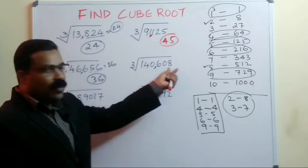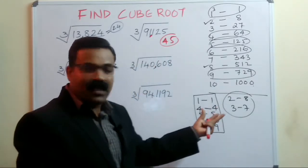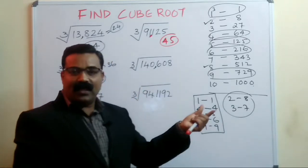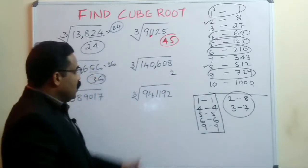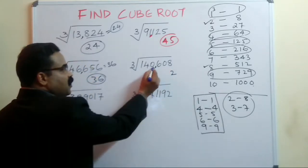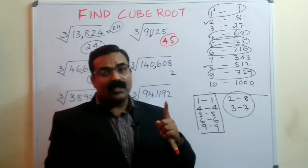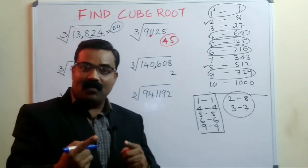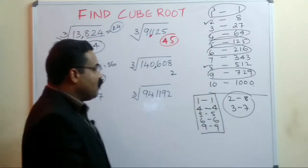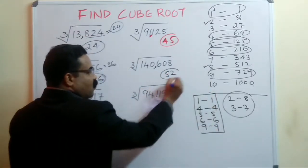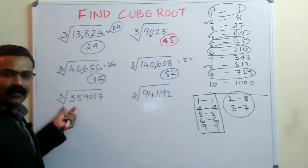For a bigger number: put a comma after the last three digits — they are 608, ending with 8. Since 2 and 8 are interchangeable, the answer ends with 2. Remove those three digits; what remains is 140. The perfect cube before 140 is 125 = 5³. So put 5 as the first digit, giving the cube root as 52.